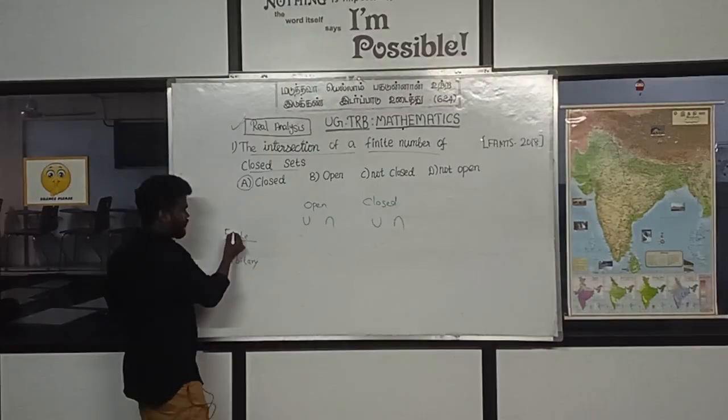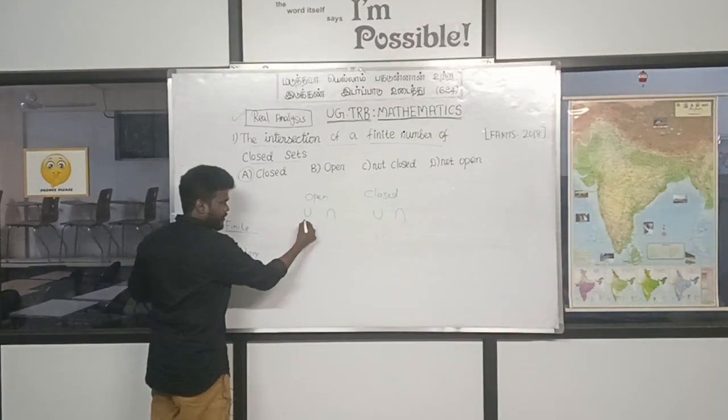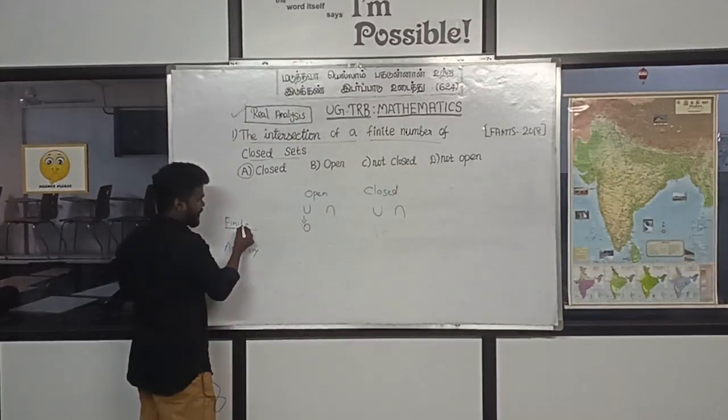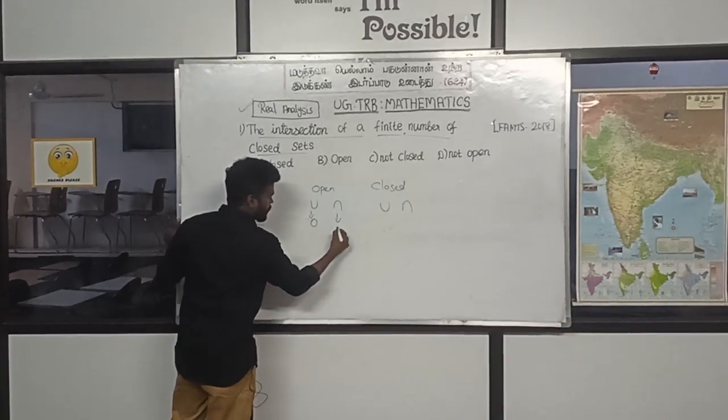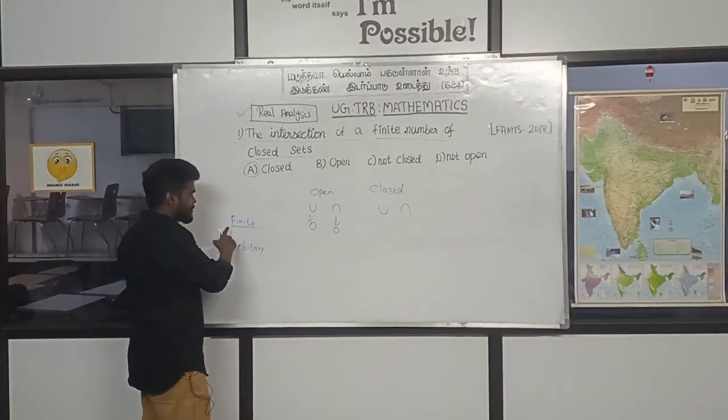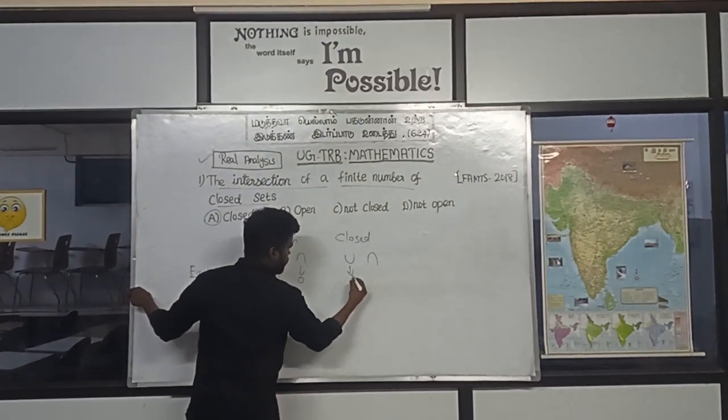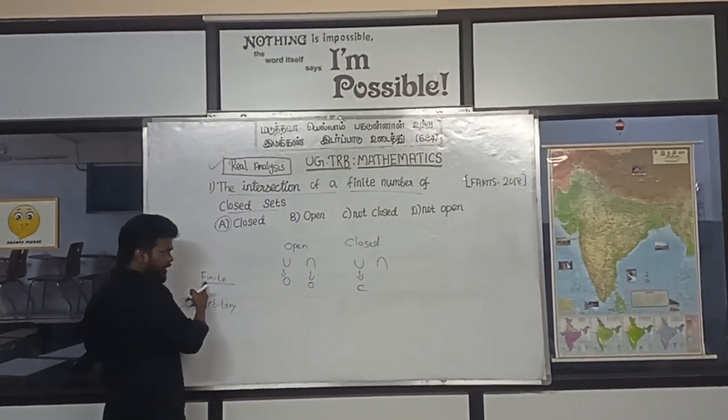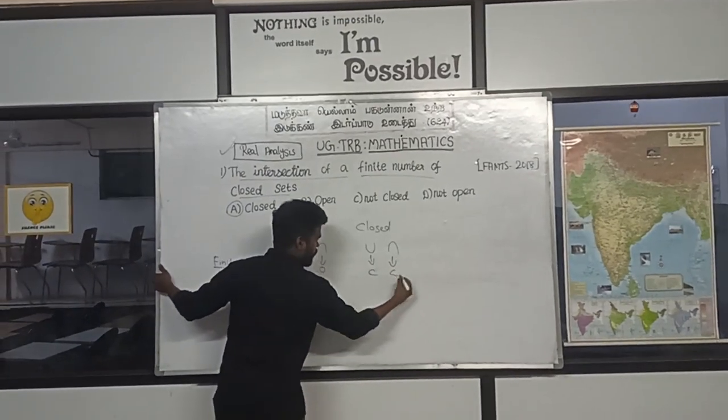Close or open: finite union of open sets are open. Finite intersection of open sets are also open. Finite union of closed sets are closed, finite intersection of closed sets are also closed.